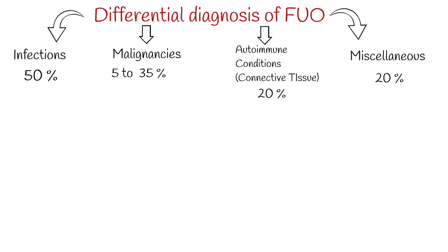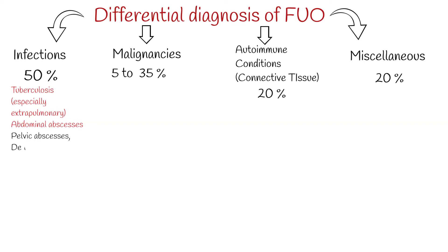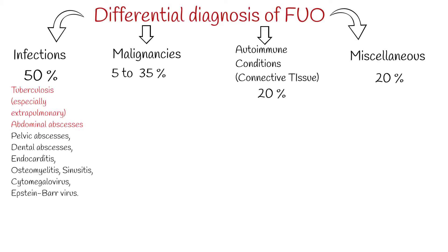The most common infectious agents are tuberculosis — especially extrapulmonary — and abdominal abscesses. Other infectious causes include pelvic abscesses, dental abscesses, endocarditis, osteomyelitis, sinusitis, cytomegalovirus, Epstein-Barr virus, human immunodeficiency virus, Lyme disease, and prostatitis.